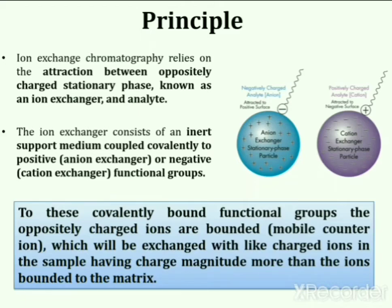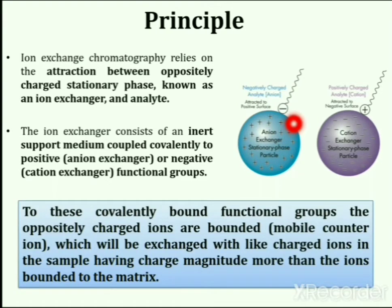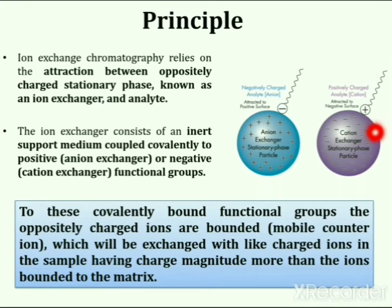In this picture you can see an ion exchanger containing a positively charged stationary phase — this is an anion exchanger. And this is a cation exchanger containing negatively charged stationary phase particles. The positively charged anion exchanger will have affinity towards negatively charged analytes. Thus if anion exchange chromatography is performed, negatively charged sample components will interact more with the stationary phase and will be exchanged for like-charged ions already bonded to the matrix. In cation exchanger chromatography, positively charged sample components will interact more with the stationary phase and will be exchanged for like-charged ions already bonded to the matrix. That is how ion exchange chromatography works.